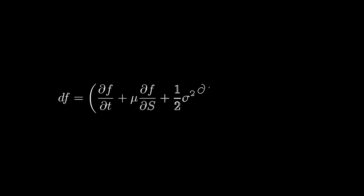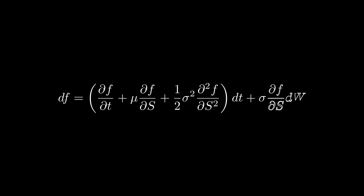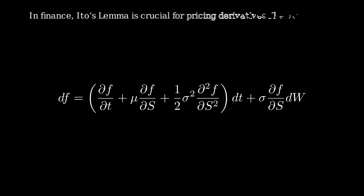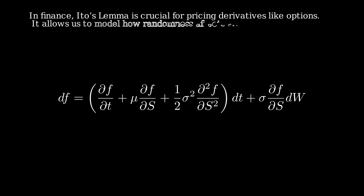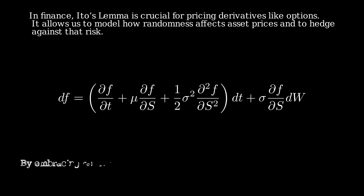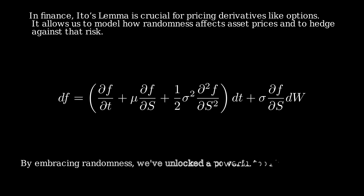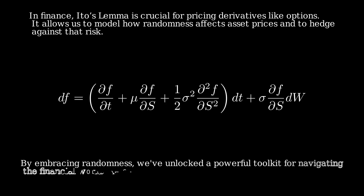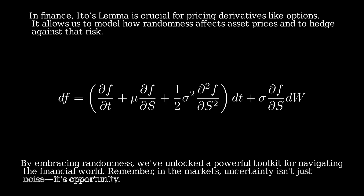So, what have we learned? Here's Itô's lemma — the cornerstone of stochastic calculus — allowing us to handle functions of random processes. In finance, it's indispensable for pricing derivatives, managing risk, and making sense of market dynamics. By embracing randomness, we've unlocked a toolkit for navigating the financial world. In markets, uncertainty isn't just noise — it's opportunity.